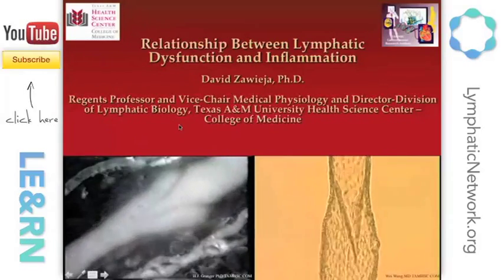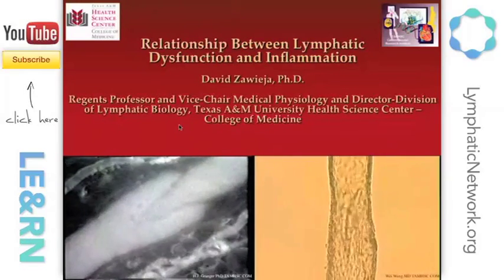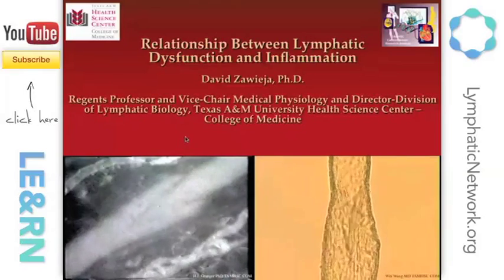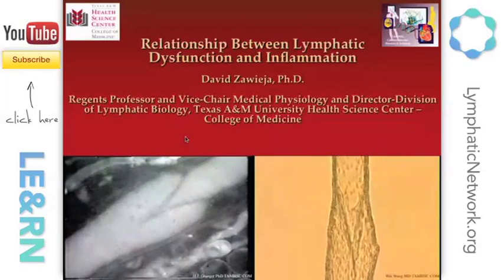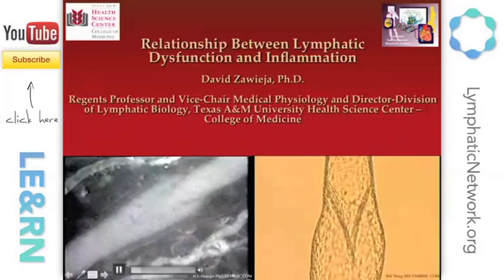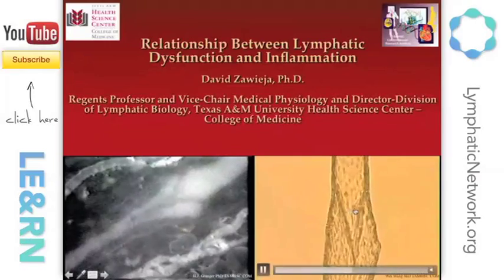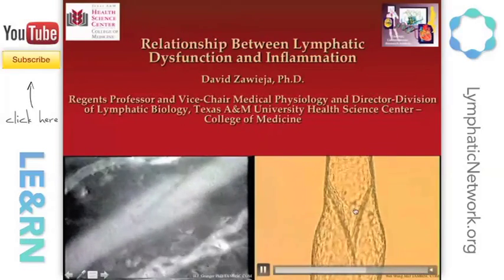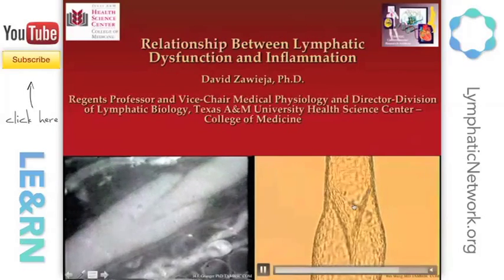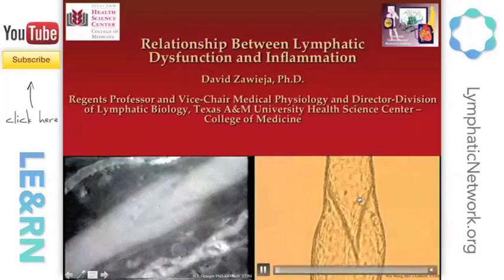What you're seeing on my introduction slide is an example of some of the lymphatic vessels and how they actually work. On the left, it's a lymphatic vessel inside the mesentery of the small intestine of a rat, and you can see the lymphatic contract and relax and the valves opening and closing. On the right, it shows the techniques we now use to take these very small vessels — about the size of a human hair — out, isolate them, cannulate them, and study their function in an ex vivo situation.